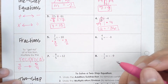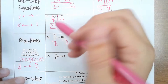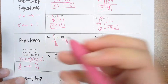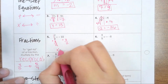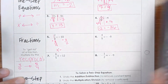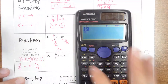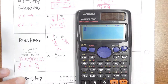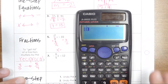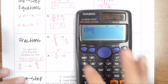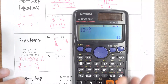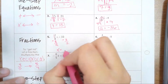When you multiply a number by its reciprocal, they cancel because it gives you 1. You are just going to be left with x equals, and then 10 times three over two gives us 15. So x equals 15.